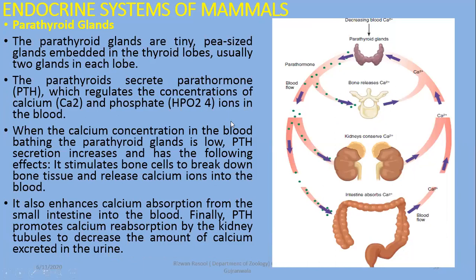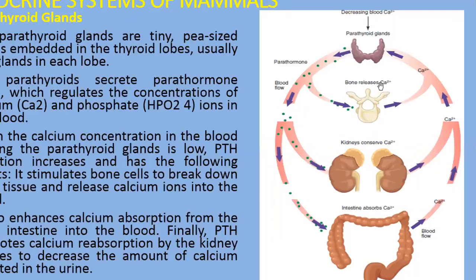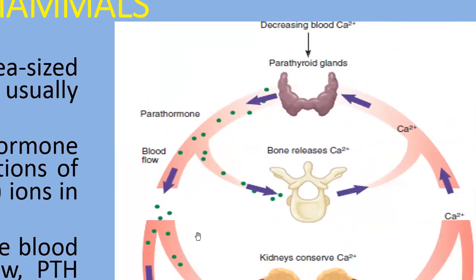Here is the second gland — the parathyroid gland. On the thyroid gland there are four smaller lobes, two on each side. There are four parathyroid glands embedded on the lobes of the thyroid gland. They produce parathyroid hormone, which is another polypeptide hormone.